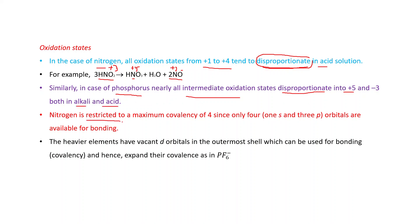Nitrogen is restricted to a maximum covalency of 4. Being a first member, it shows some anomalous properties. Its covalency cannot exceed more than 4 because it has only four orbitals in its outermost shell: one 2s and three 2p orbitals. The heavier elements have vacant d orbitals in the outermost shell which can be used for bonding and hence expand their covalency as in PF6-. Thank you, dear students.